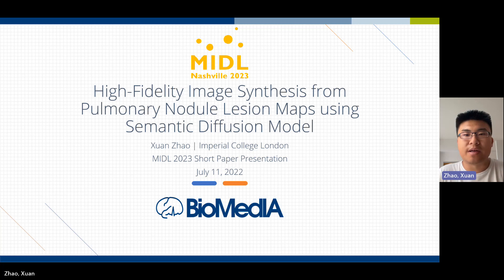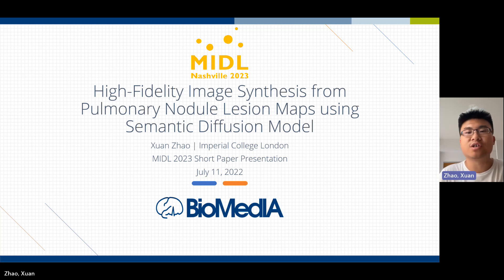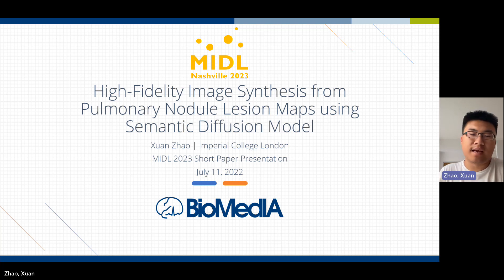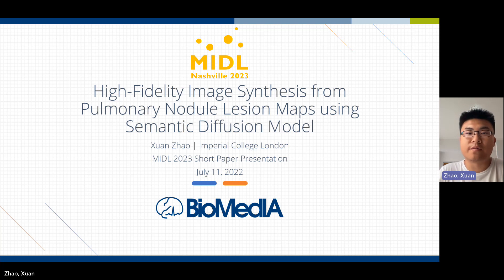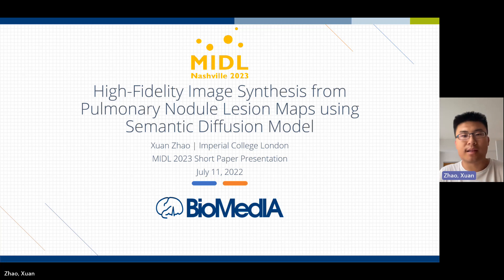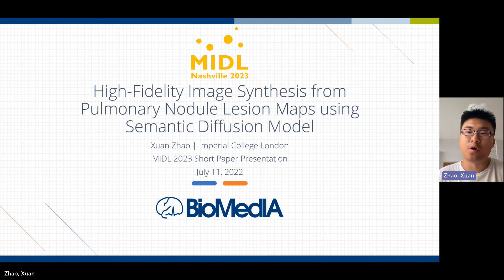Additionally, a body mask is also generated, which comprises the entire patient's body. The largest connected region is then selected. The final mask is then composed of these structures in this order: background, left lung, right lung, trachea, body mask, and nodule if there is one.